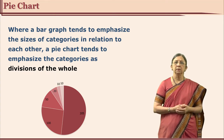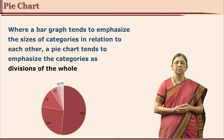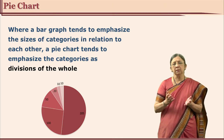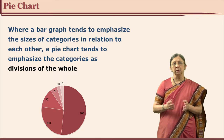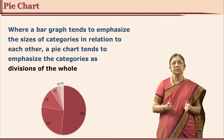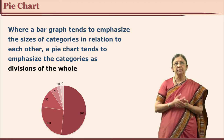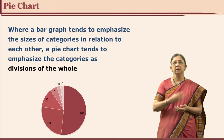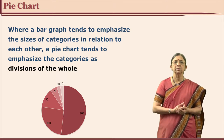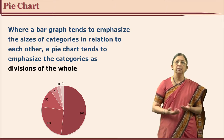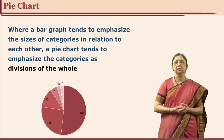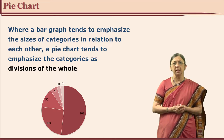You have the class intervals or the categories, and from each category there is some data and there is a total. The full circle is 360 degrees. So from 360 degrees, how much weightage is given to each category is shown. If it is represented like this it is known as a pie graph.